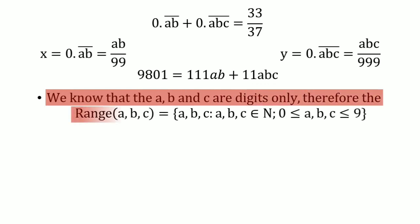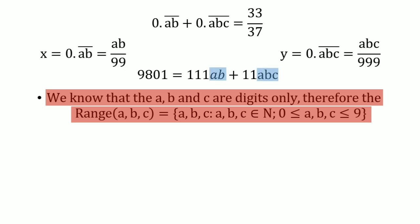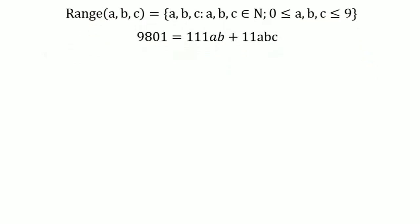Since a, b, and c are digits, their range is 0 to 9 inclusive. Here ab and abc are numbers — not multiplications — formed by those digits. Using this range constraint together with the equation, we can find the values of a, b, and c.